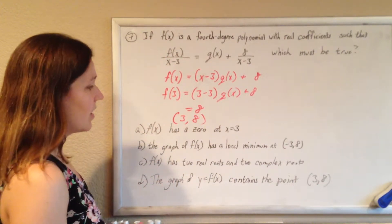So when x is 3, y is 8, and therefore the graph should contain the point (3, 8).